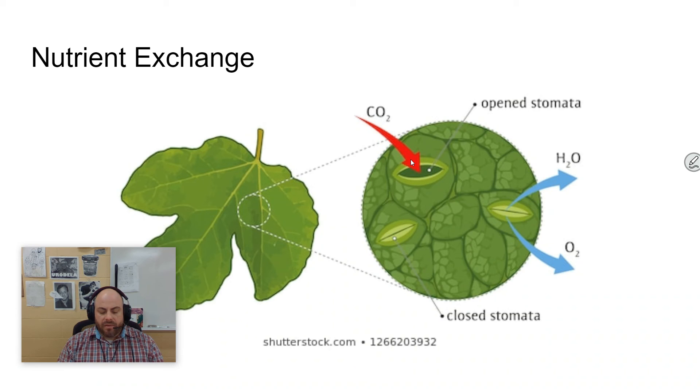And lastly, this idea of nutrient exchange. Animals and plants both have structures that allow for this. We've mentioned the animal, the small intestine. A great example of this with plants are stomata. These little, looks like little fish mouths on the leaves. And these are little openings.